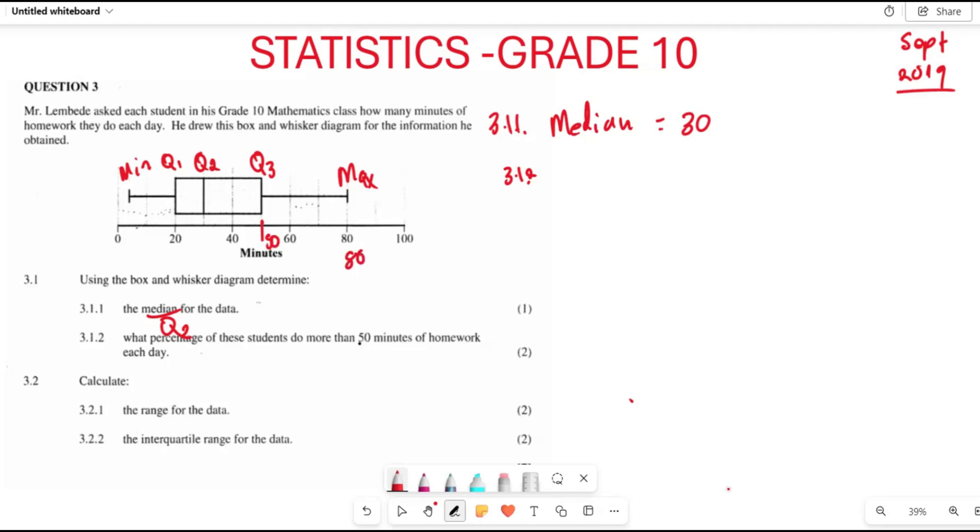So you're going to say 80 subtract 50 minutes, which gives you 30. Then you say 30 over 80 multiply by 100 to get the percentage.